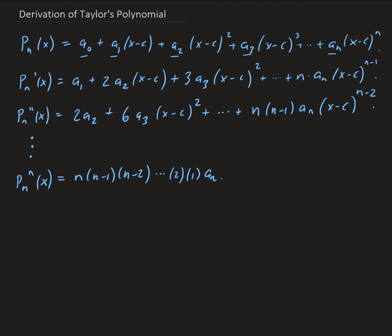The next step is to expand around a center point — let x be equal to c. This is called our expansion point, or center of expansion. In the previous video, we were expanding around 0. We'll talk more about this point later when we discuss the radius of convergence. It turns out that Taylor polynomials, expressed as a series, always converge at the center point.